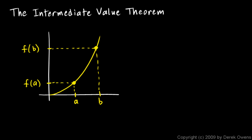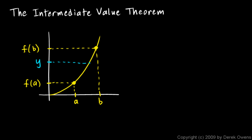I'm going to make a few comments on the intermediate value theorem and then we'll come back and work some more examples. Remember what the theorem says: if f(a) is some value and f(b) is some value, and this is a continuous function on the interval from a to b, then any y-value between f(a) and f(b) will correspond to a point on the curve. There must be some x value, which we often call c, between a and b, such that f(c) is equal to y.